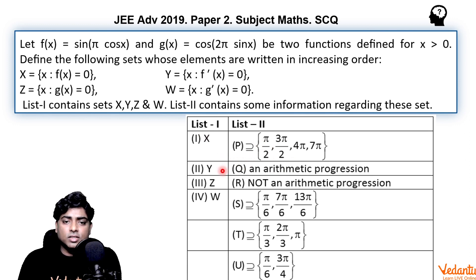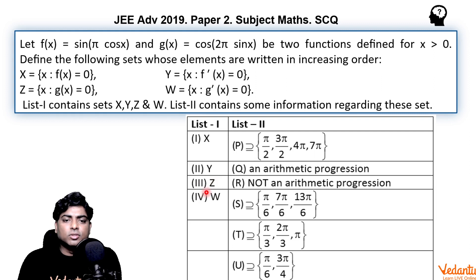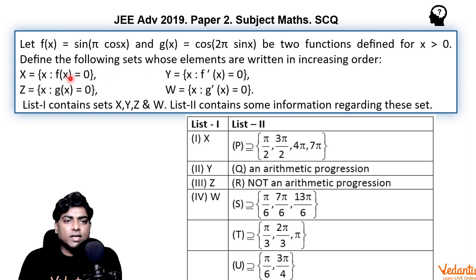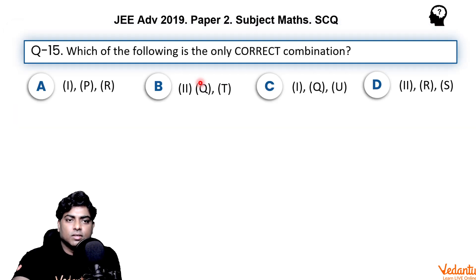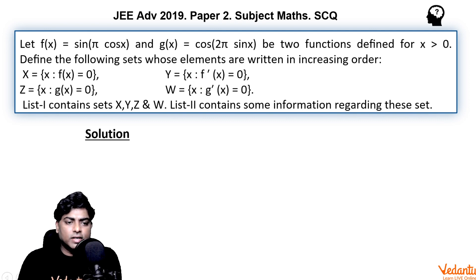For the second question, the third and fourth entries — Z and W — need to be solved. X and Y are related to function f only: X is the set of values where f(x) = 0, and Y where f'(x) = 0. Z and W are related to g(x). So for question 15, we need to solve f(x) = 0 and f'(x) = 0.